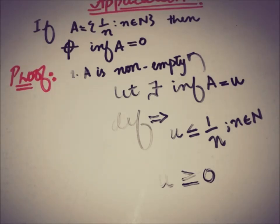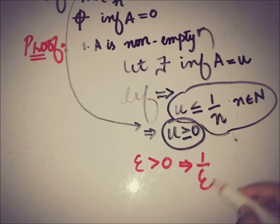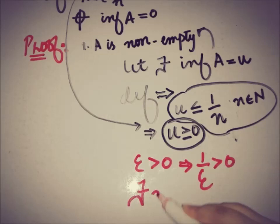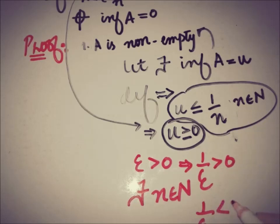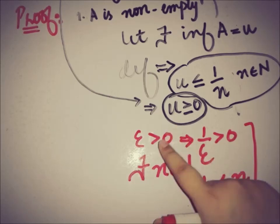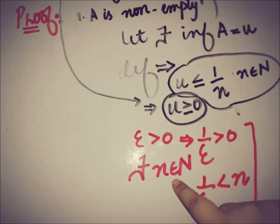Now, the Archimedean property says: for any positive number ε, the quantity 1/ε is also positive. By the Archimedean property, there exists a natural number n such that 1/ε < n. So we have an arbitrary positive ε, and we extract the existence of such an n satisfying this relation.